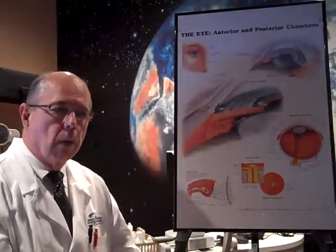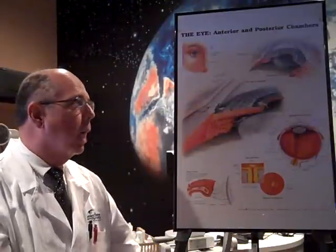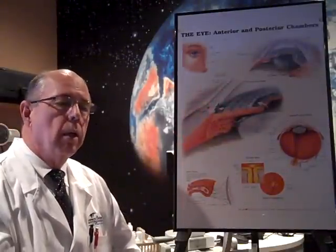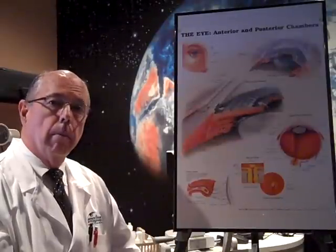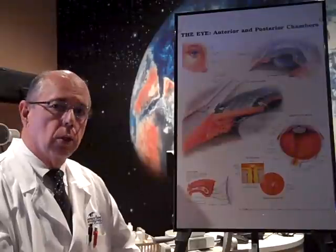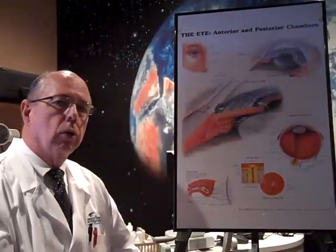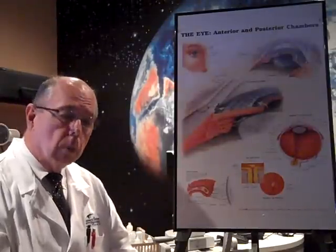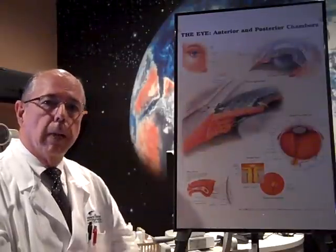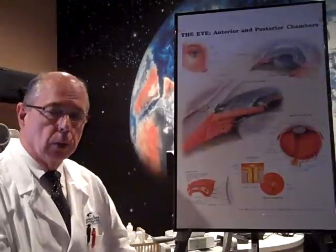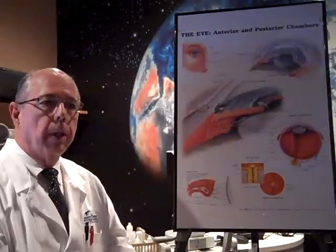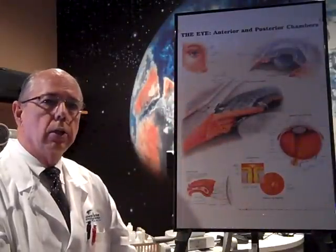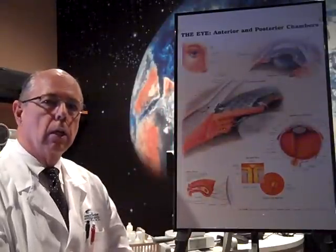If those two things fail, then the last resort is surgery, where we actually make an opening through into the eye to let the fluid drain out. So there are three ways of treating glaucoma: medications, laser treatment, and surgery. We usually set a target pressure depending on how bad the glaucoma is and where the pressure was the first time we checked it — a safe level to target and then go from there.